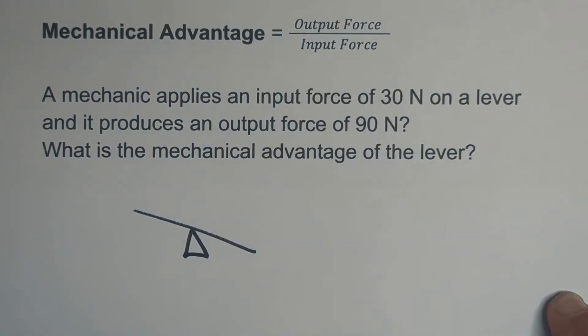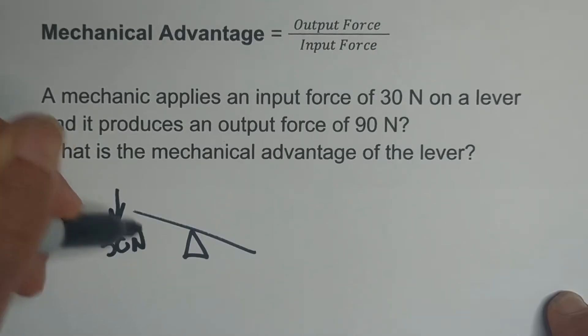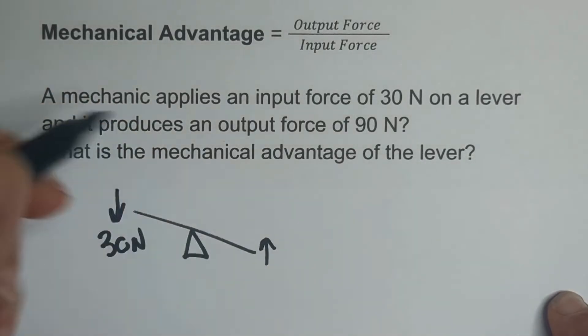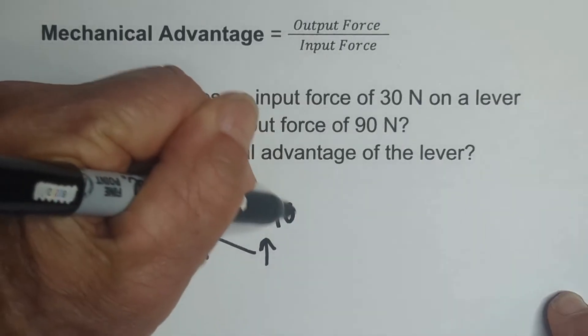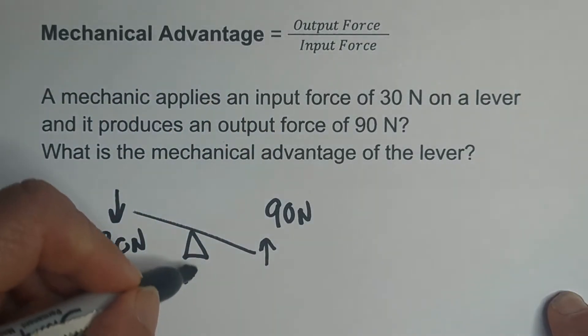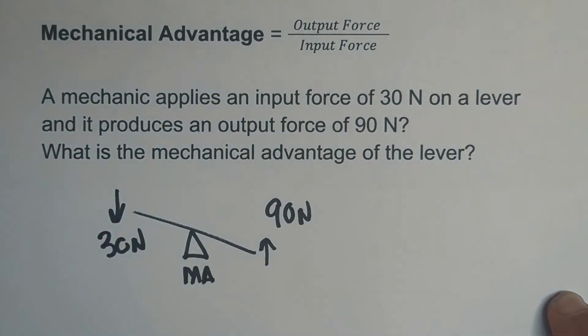We have an input force of 30 newtons and an output of 90 newtons, and we want the MA mechanical advantage.